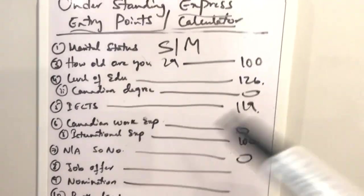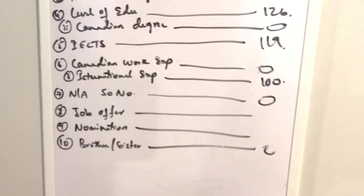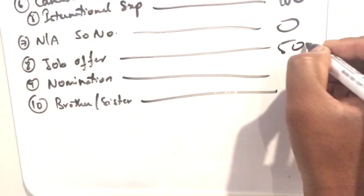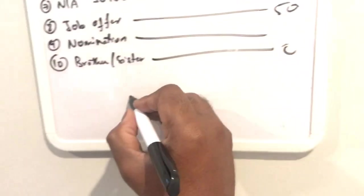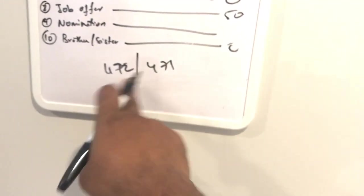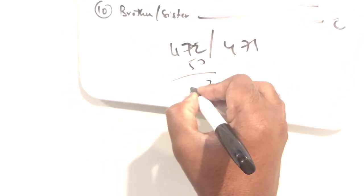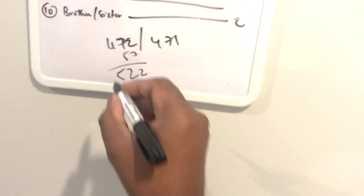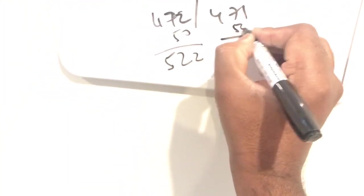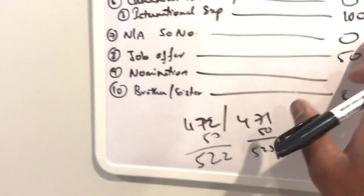The next thing is either you are single or married, job offer. Maybe you applied for some company and some company wants to offer you because it's so much in demand and they want to give you offer and sponsor you. So you will get additional 50 points, which will be like again for 472 or 471, either if you are single or with spouse, then add 50 points. 522 or equal to 523 or so.